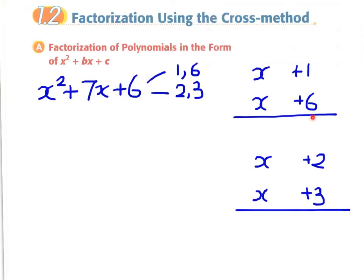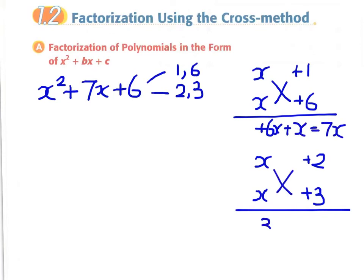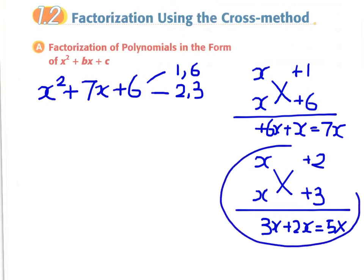For the last term 6, since we have decomposed it into two pairs of factors, plus 1 times plus 6 always gives 6, and 2 times 3 always gives 6. So we only need to check which expansion gives the middle term of 7x. For the first pair, we get 6x plus x, which is 7x. For the second pair, we get 3x plus 2x, which is 5x — so the second pair does not work.